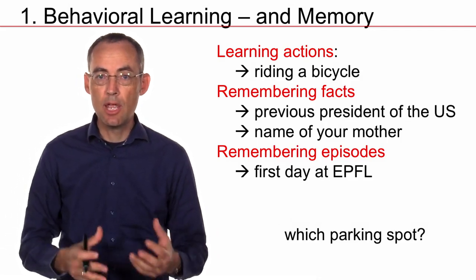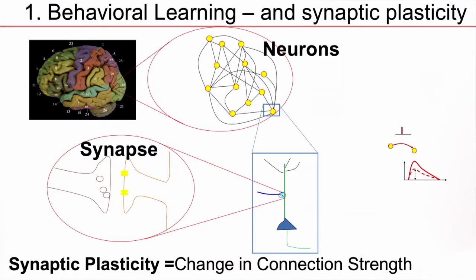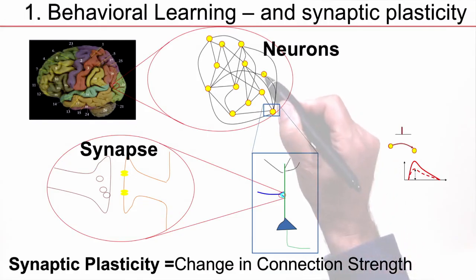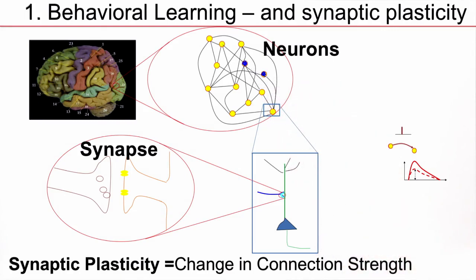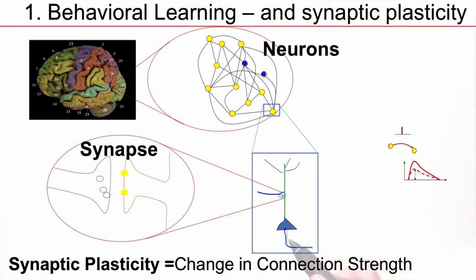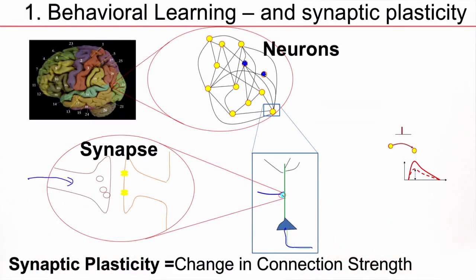Whatever we remember is stored in our brain. Our brain is made up of neurons. Neurons get active while we look at things, while we experience things. These neurons have long axonal branches — axons on this side — and they have dendrites. And if a signal arrives from one neuron, it will go over the synapse, the synaptic contact point on the dendrite, and it will cause a response.